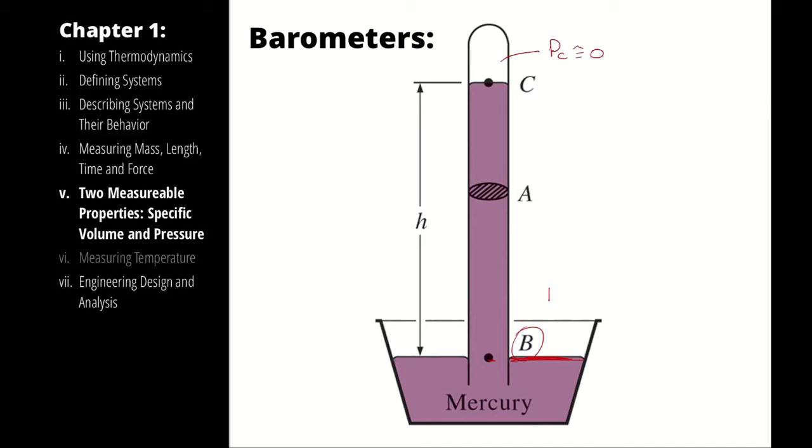Therefore, Pb is pretty close to atmospheric pressure. Then you could describe the pressure difference between A and B as being the density of mercury times gravity times the height of the column of mercury.